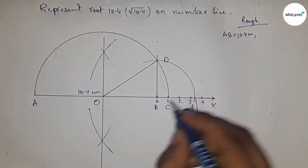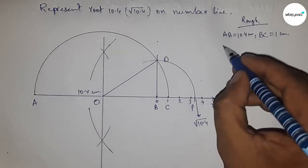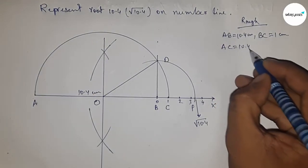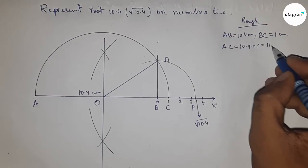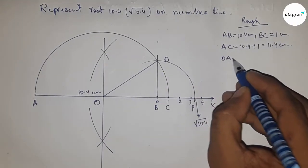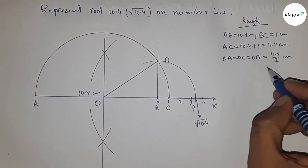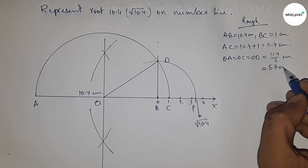Given AB equals 10.4 centimeters, BC equals 1 centimeter, so AC equals 10.4 plus 1, which is 11.4 centimeters. Radius OA, OC, and OD equal 11.4 by 2, which equals 5.7 centimeters.